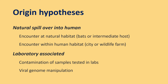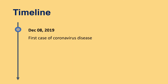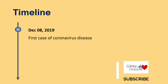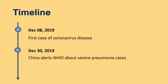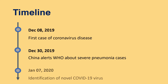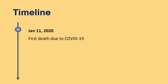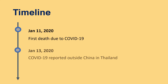Viral genome manipulation is another hypothesis that needs to be proved. The first case of coronavirus disease occurred on December 8, 2019. Following this, China alerted WHO about severe pneumonia cases spreading in its province. On January 7, 2020, the novel coronavirus was identified. The first death from coronavirus was reported on January 11, and coronavirus was first reported outside China in Thailand.